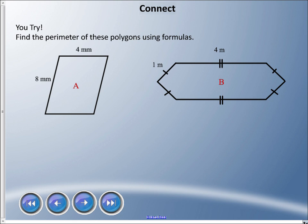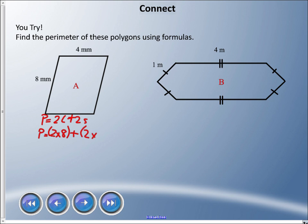Let's solve polygon A. I recommend starting with the formula, then substituting. P = 2L + 2S. The long side is 8 and the short side is 4, so P = 2(8) + 2(4) = 16 + 8 = 24 millimeters. Always write the formula first — it keeps things organized.